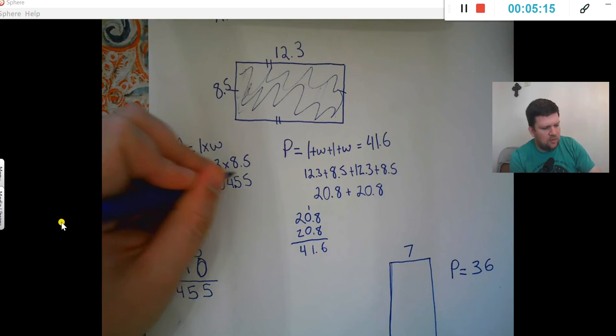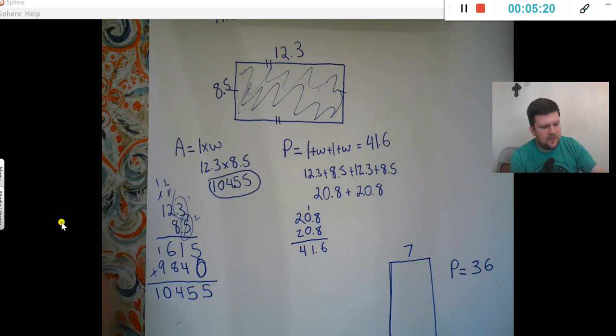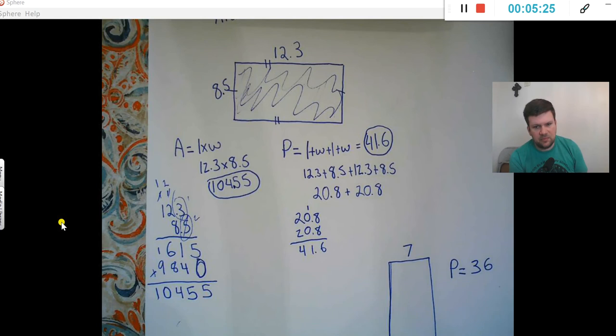So, my area would be 104.55. My perimeter would be 41.6.